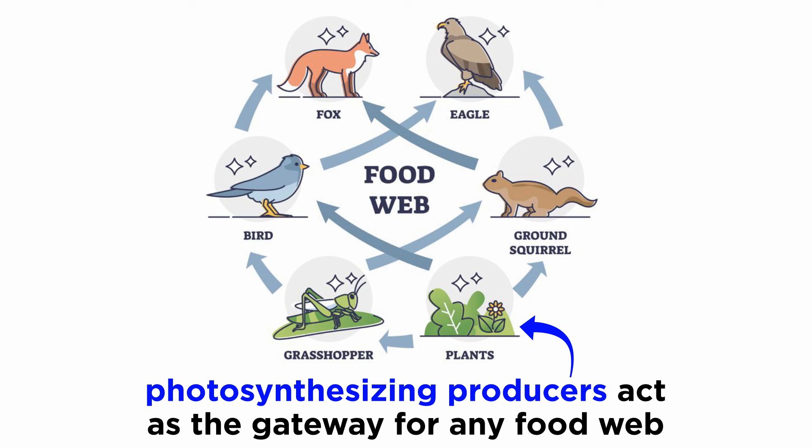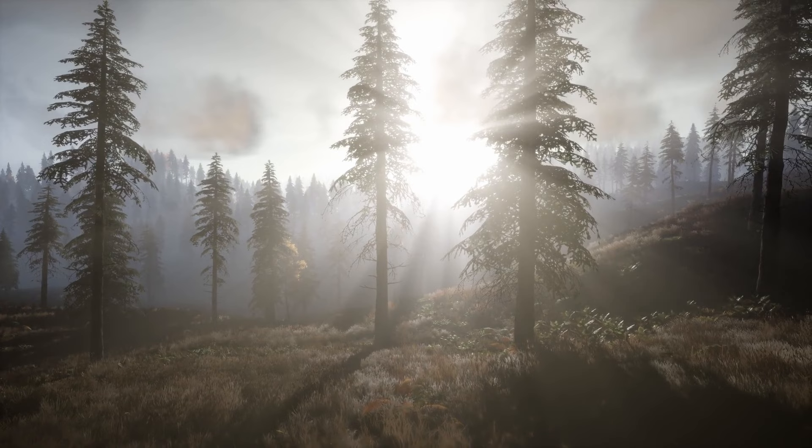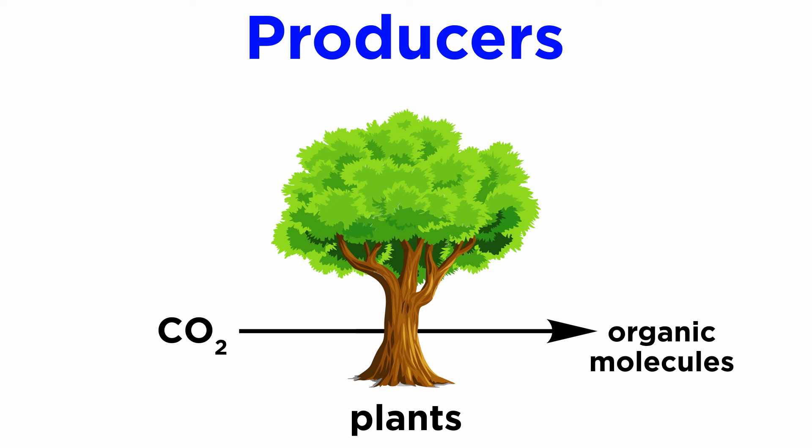If photosynthesizers were removed, the flow of energy would be cut off, and the other organisms would run out of food. In this way, photosynthesizers lay the foundation for every light-receiving ecosystem. Plants, algae, and photosynthetic bacteria act as producers.